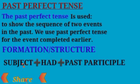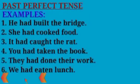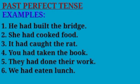The structure or formula is: Subject + had + past participle. For example: He had built the bridge. She had cooked the food. It had caught. You had taken the book. They had done their work. We had eaten lunch.